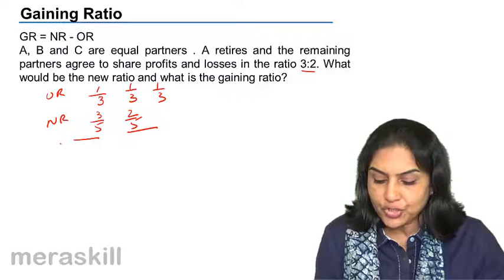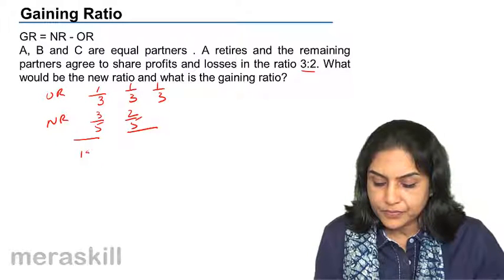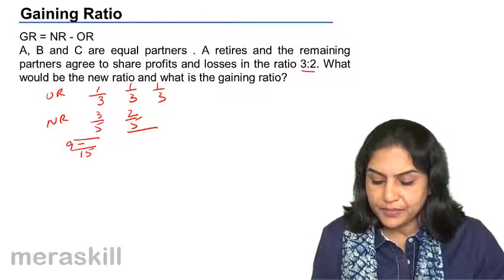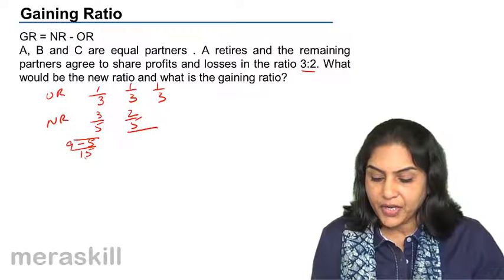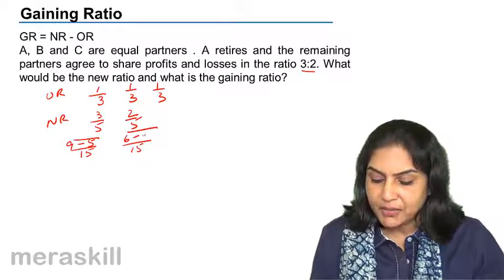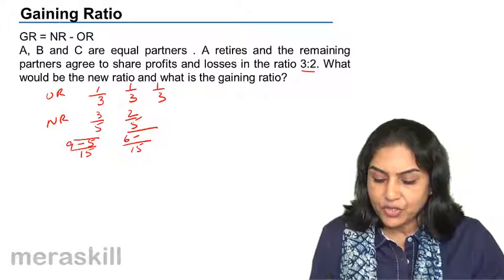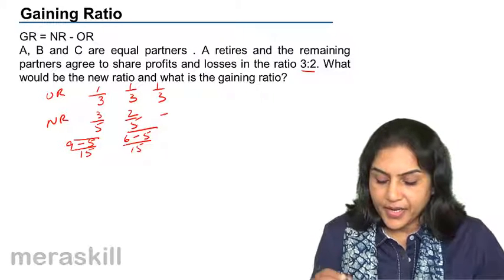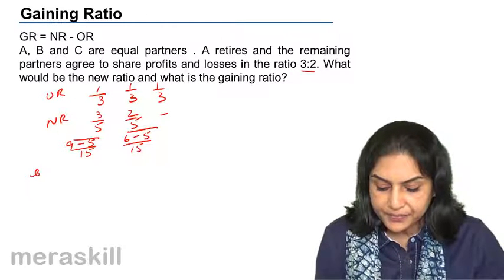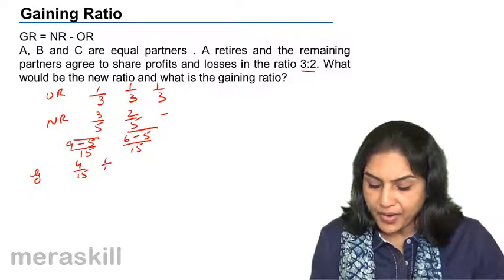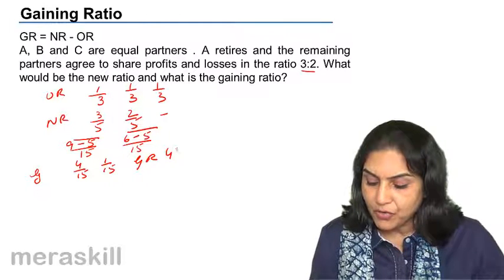New ratio minus old ratio: for B, that is 9 by 15 minus 5 by 15. Similarly, for C, 2 by 5 minus 1 by 3, with denominator 15, gives 6 by 15 minus 5 by 15. The gains are 4 by 15 and 1 by 15. So the gaining ratio is 4 is to 1.